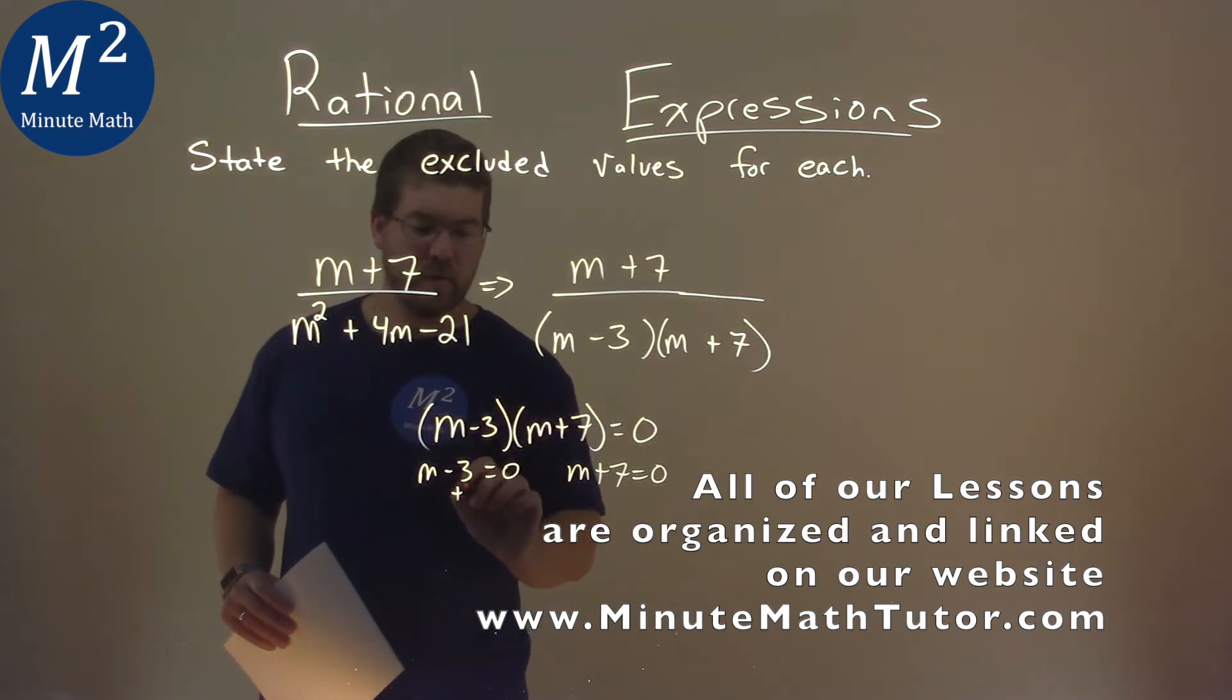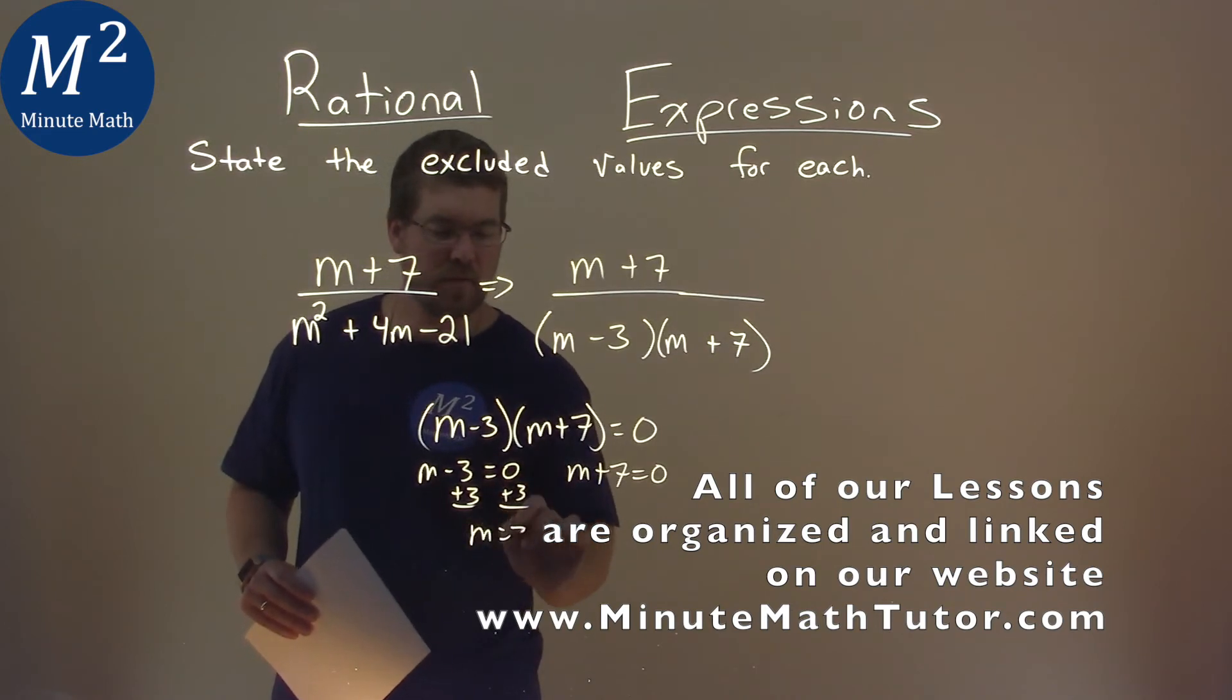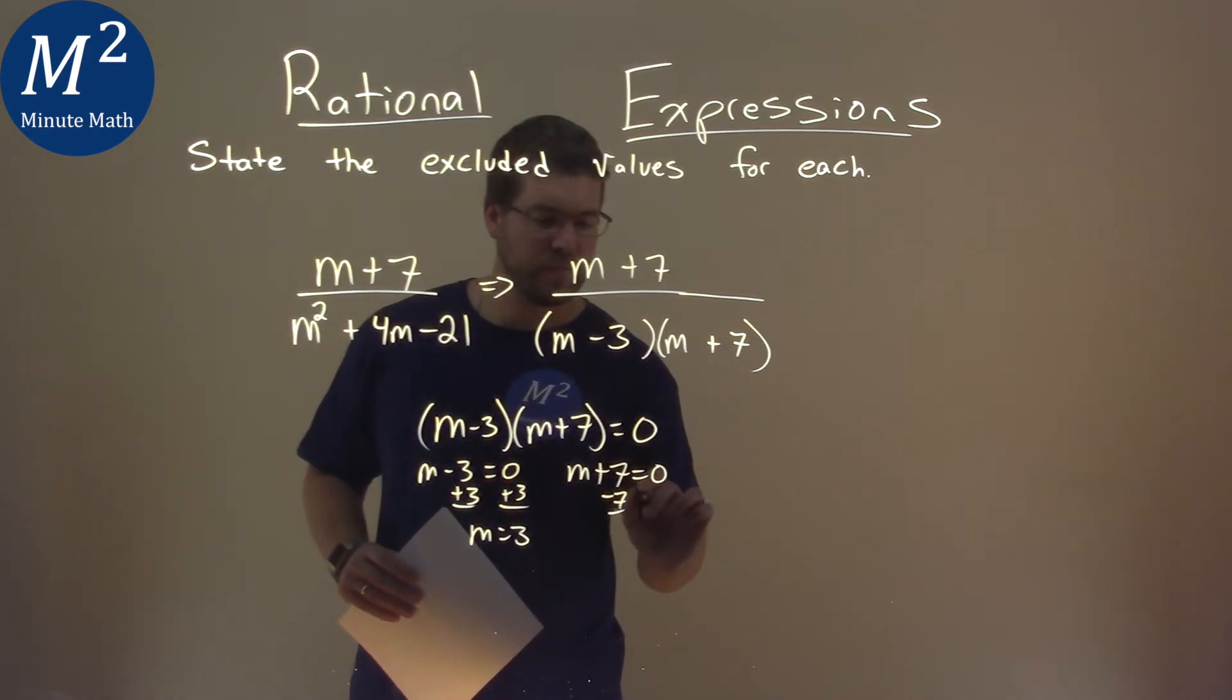We add a 3 to both sides, and we have m equals a positive 3, and subtract a 7, and m equals a negative 7.